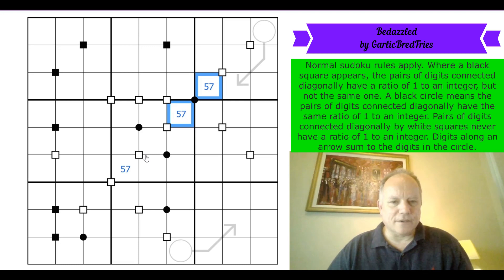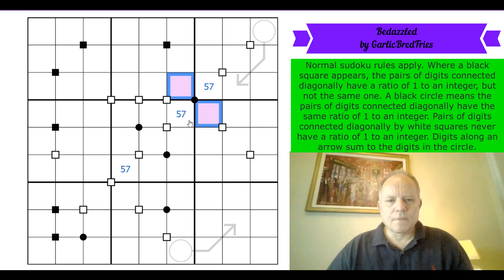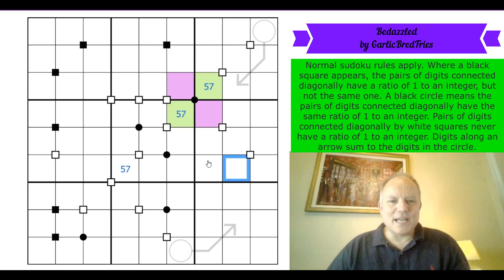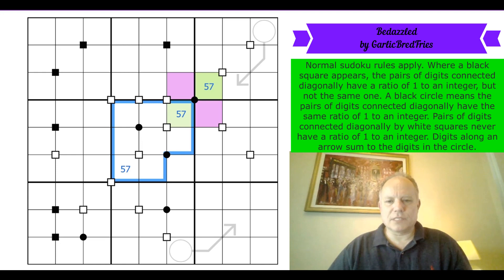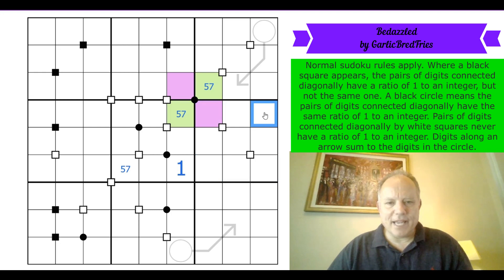Okay, those cells with the 1:1 ratio are the same digit. Now I've realized that ones can never be on the white dots, because they must have an integer ratio with the digit on the other side. So ones can never be on the white dots, and all these cells in this box are on white dots — so the one goes here.